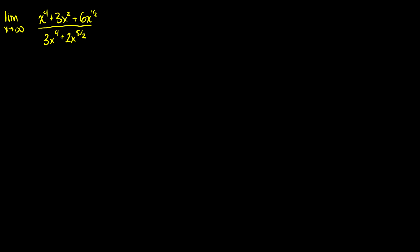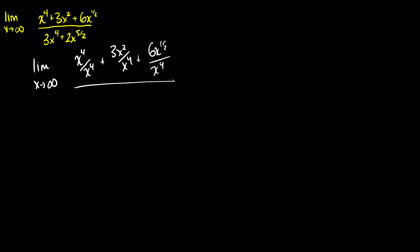The limit as x approaches infinity of x⁴ + 3x² + 6x^(1/2) over 3x⁴ + 2x^(5/2). The first thing we do is divide everything by the highest power of x. As x goes to infinity, we divide every term on the top by x⁴, since that's the highest power. So we get 3x² / x⁴ + 6x^(1/2) / x⁴, and then we divide everything on the bottom by x⁴ as well — so we have 3x⁴ / x⁴ + 2x^(5/2) / x⁴.